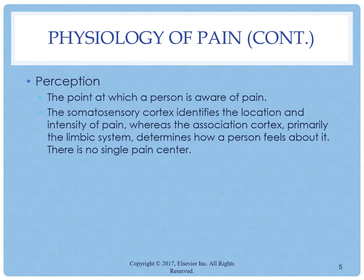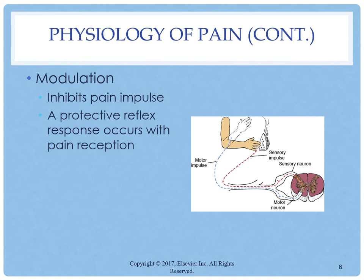Once a pain stimulus reaches the cerebral cortex, the brain interprets the quality of the pain and processes information from past experiences, knowledge, and cultural associations in the perception of pain. Perception is the point at which a person is aware of pain. Once the brain perceives pain, there is a release of inhibitory neurotransmitters such as endorphins, serotonin, and norepinephrine, which hinder transmission of pain and produce an analgesic effect. These inhibitory neuromodulators are present in higher levels in people who have less pain than others with a similar injury.